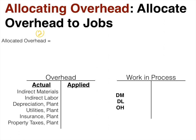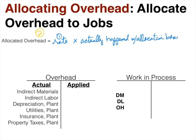Step two in the process of calculating allocated overhead is to take the rate calculated in step one and multiply that by what actually happened with the allocation base. So if a specific job used a hundred direct labor hours and that's our allocation base, we multiply the estimated rate by the actual direct labor hours for that job. This allocated overhead is what appears on the right-hand side of our overhead T-account and goes into work in process.